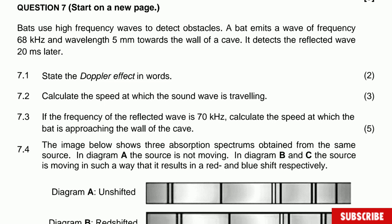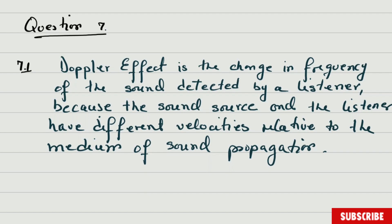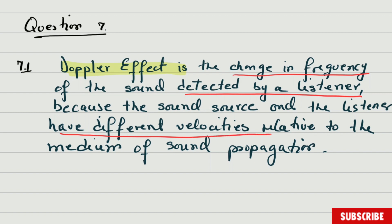Question 7.1: State the Doppler effect in words. The Doppler effect states that it is the change in frequency detected by a listener because the sound source and the listener have different velocities relative to the medium of sound propagation. An important part is the change in frequency detected by a listener, because the source and listener have different velocities relative to the medium of sound propagation.